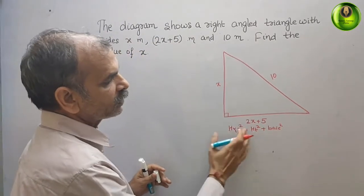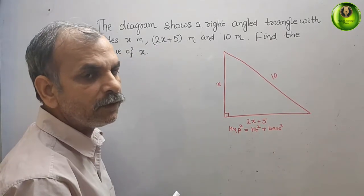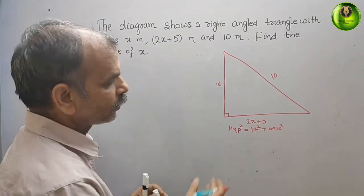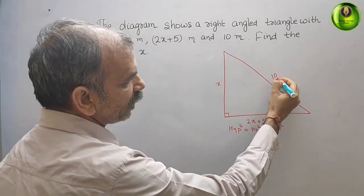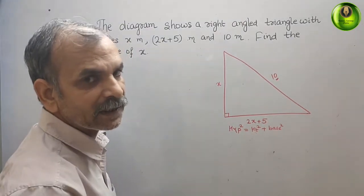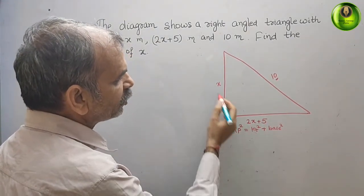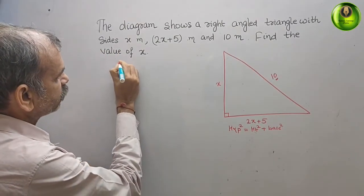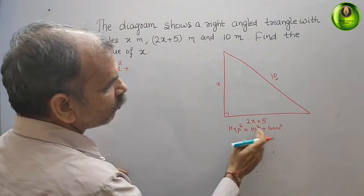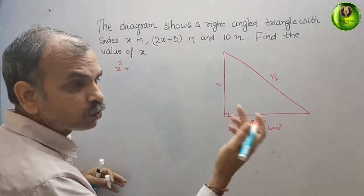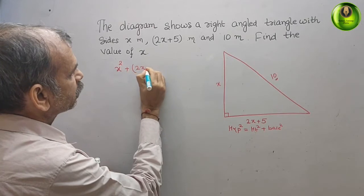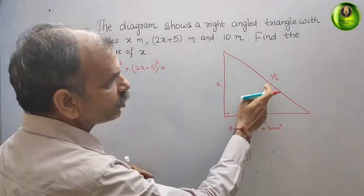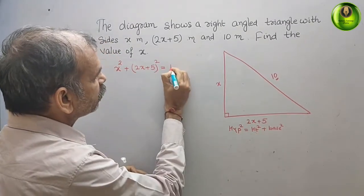Now we will substitute into this. The height is x, so that gives x squared. The base is 2x plus 5, so that gives x squared plus (2x plus 5) whole squared, and that is equal to the hypotenuse squared, which is 10 squared.